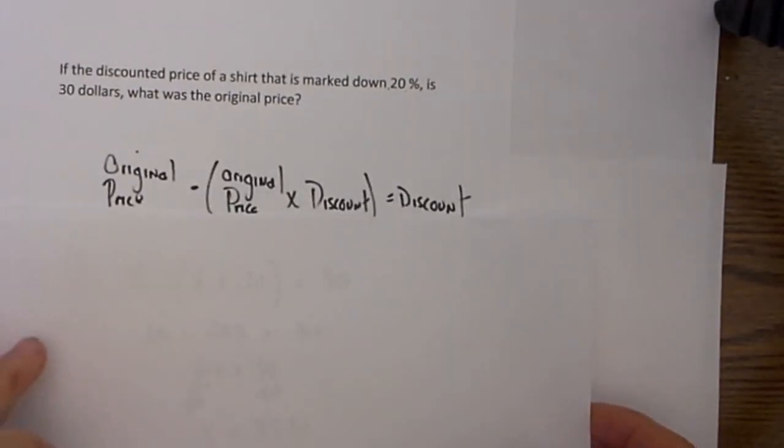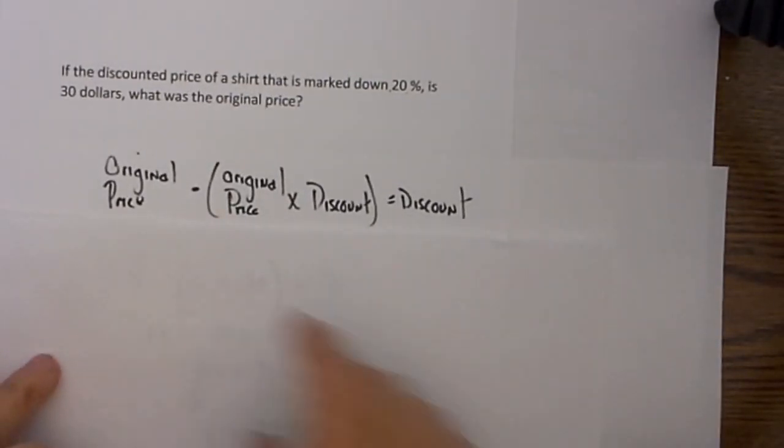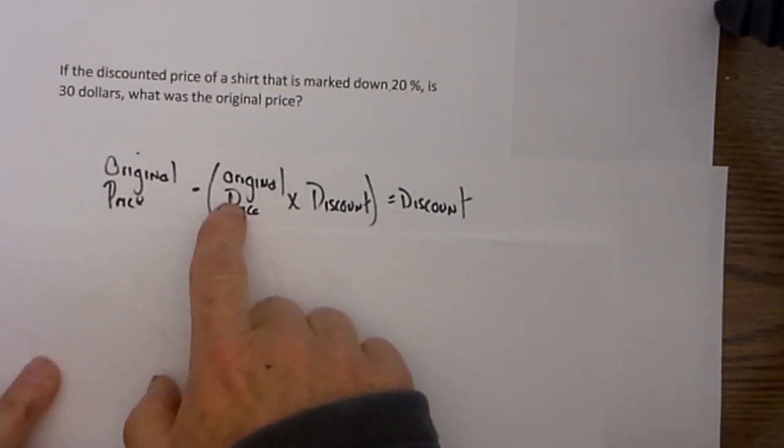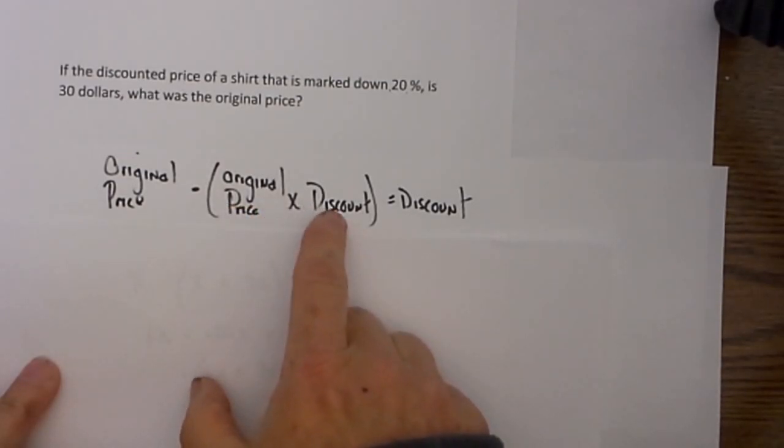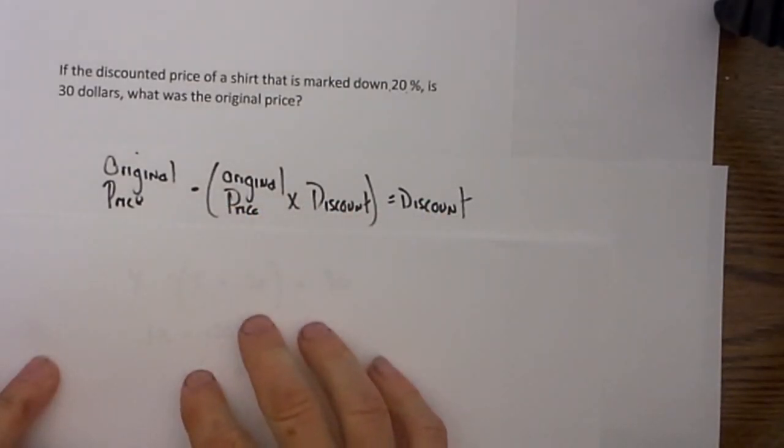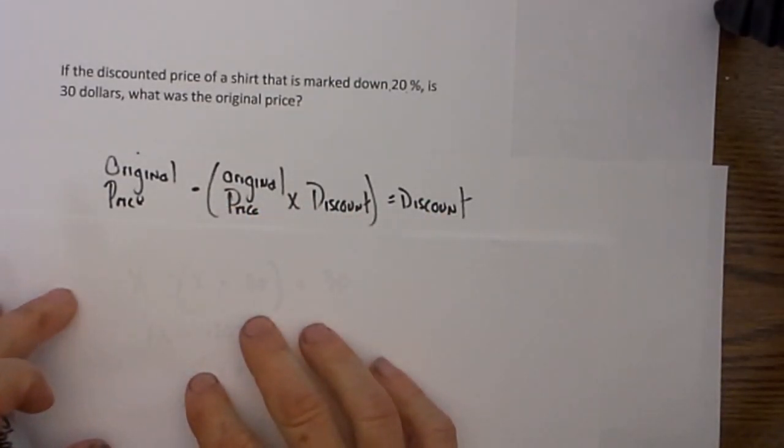Let's go back to our original formula and we can use the original price minus the original price times the discount equals the discount. Then all we have to do is fill in what is given.